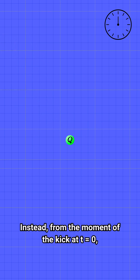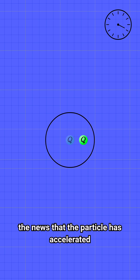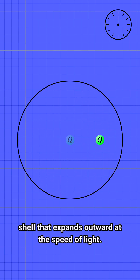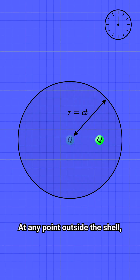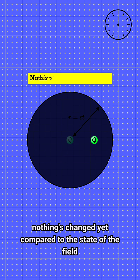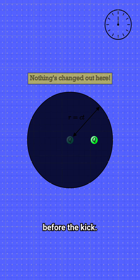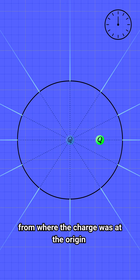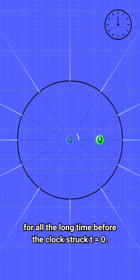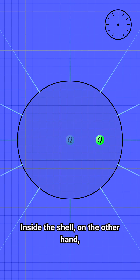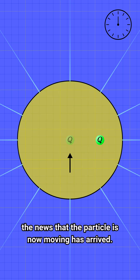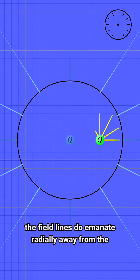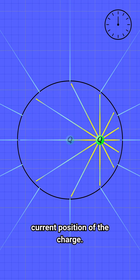Instead, from the moment of the kick at t equals zero, the news that the particle has accelerated radiates away from the origin in a spherical shell that expands outward at the speed of light. At any point outside the shell, nothing's changed yet compared to the state of the field before the kick — the field lines still point radially away from where the charge was at the origin. Inside the shell, on the other hand, the news that the particle is now moving has arrived, and so in this region the field lines do emanate radially away from the current position of the charge.